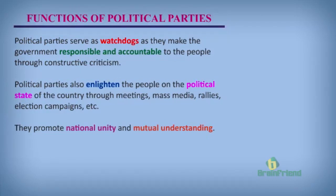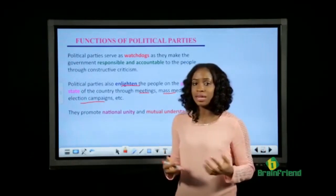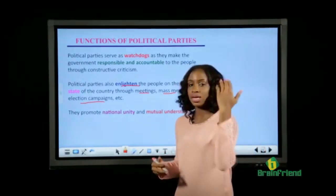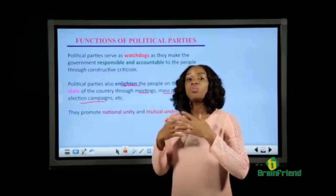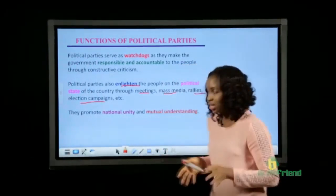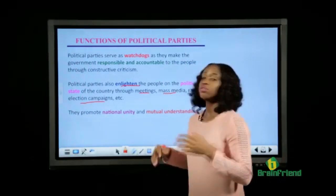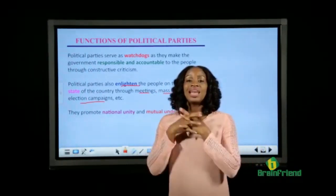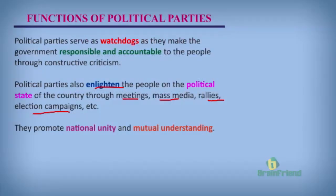Political parties also enlighten the people on the political state of the country. They do this through meetings, the mass media, rallies, and election campaigns. A lot of things go on that the general public do not know about, but through political parties we are able to know. For example, a prominent person in a party may go to the media and make a statement now put in the newspaper. Through their rallies and election campaigns, they are able to enlighten people more on the political state of the country.